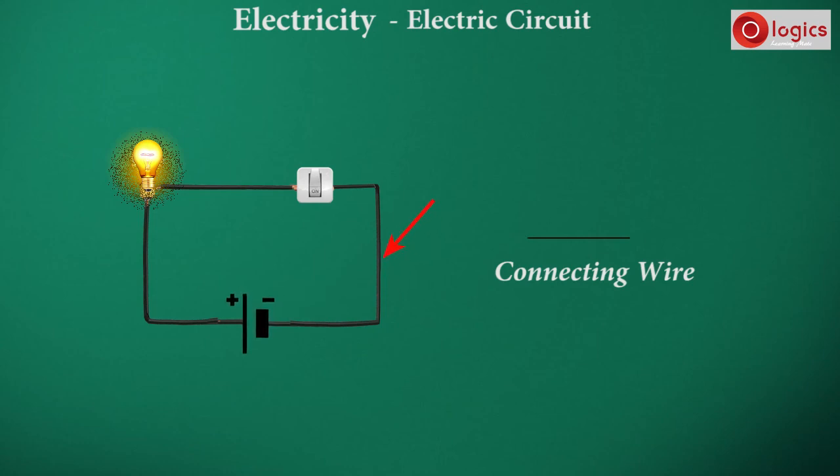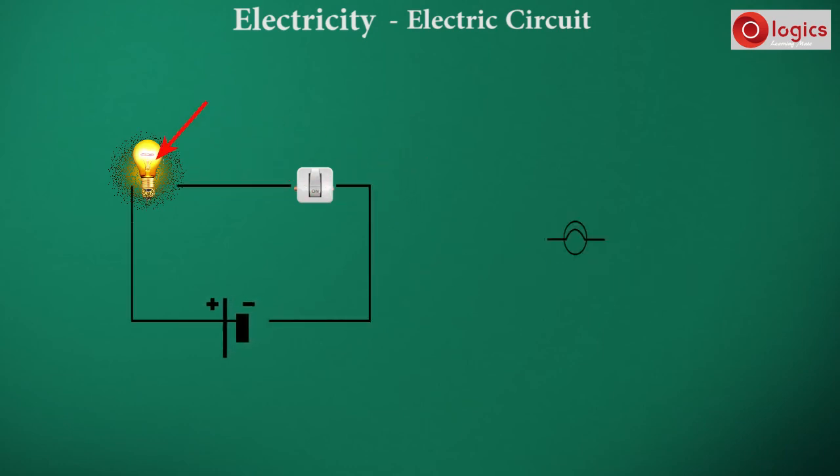Connected wire is represented by a straight line. A bulb converts electrical energy to light energy. It is a circle with an upside-down U in it.